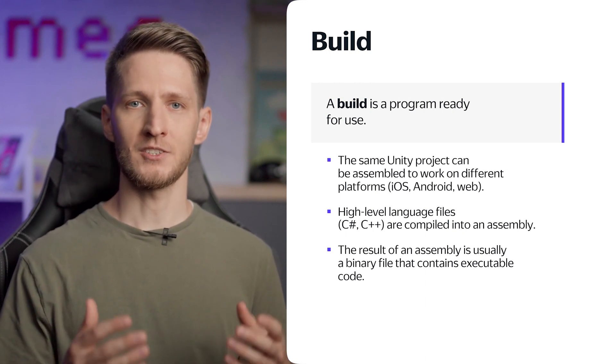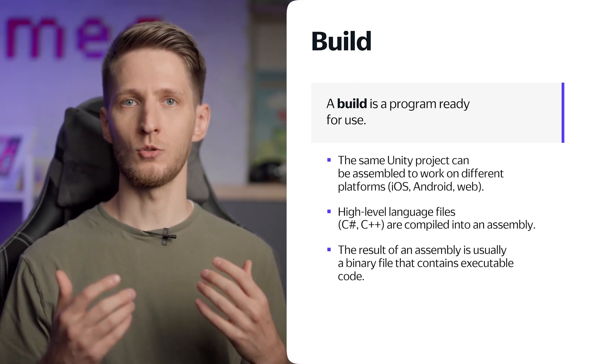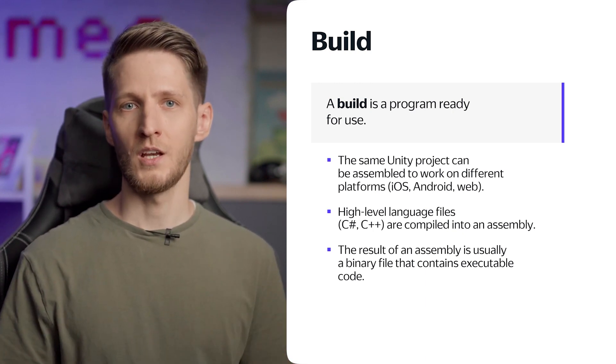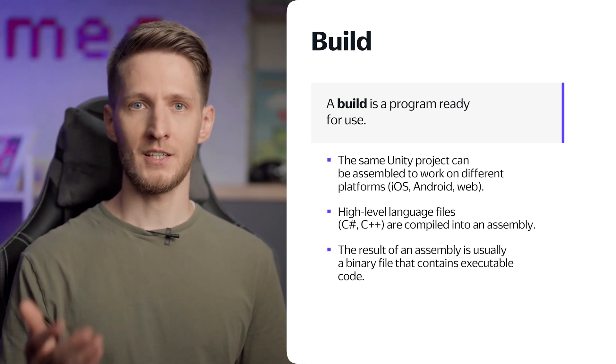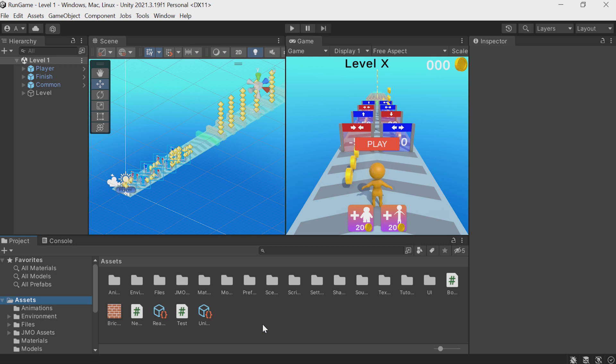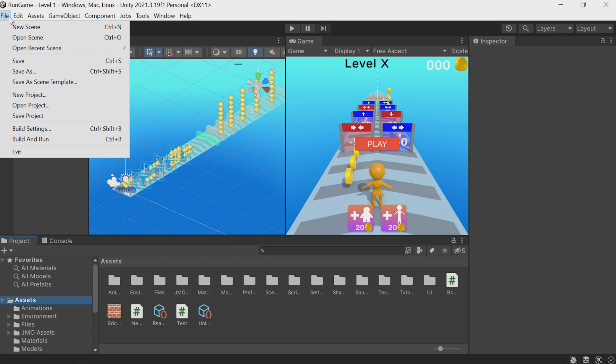A build is a version of our project that's compiled for a target platform. Unity supports many platforms, including WebGL. We'll optimize our project for the browser environment, create a build, and run the game on our computer. First, let's switch platforms in our Unity build settings. Go to File, Build Settings.